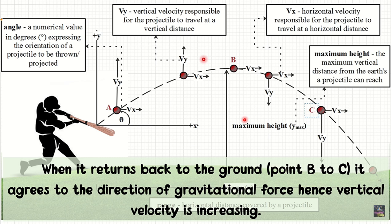So again, if the object or projectile is thrown or projected upward, its velocity decreases as it reaches the maximum height. But if the object returns back to the ground, its velocity increases because it agrees with the direction of the gravitational force.